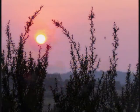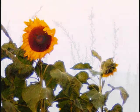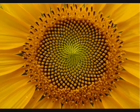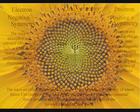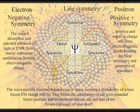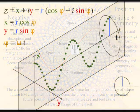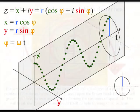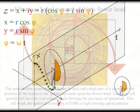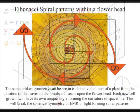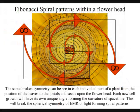We have a universal dynamically forming geometry, forming symmetry from simple dynamics. The forward momentum of electromagnetic radiation will place light-charged particles that repel, becoming equally displaced along the curvature of their own created space-time. The same broken symmetry can be seen in each individual part of a plant, from the position of the leaves to the petals and seeds upon the flower head.